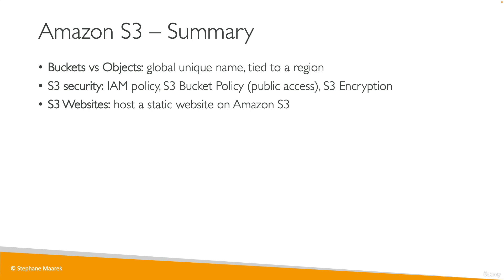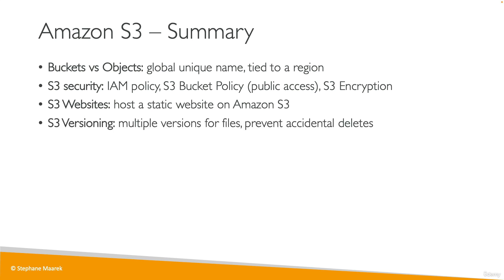We can enable websites on an S3 bucket — this is the idea of hosting a static website on Amazon S3. You first need to make sure that the bucket is going to be public, and then we can statically host some files. We also have S3 versioning, which allows multiple versions of a file to prevent accidental deletes and to roll back to previous versions if needed.